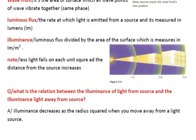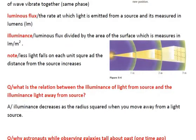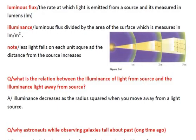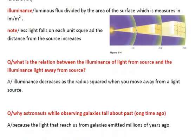We have a question here: what is the relation between the illuminance of light from the source and the illuminance of light away from the source? If you look at the figure, we have illuminance in a small square and illuminance in the large square. The answer says illuminance decreases as the radius squared when you move away from the light source. So in here, illuminance is high, but as we pass a large distance from the source, like three meters for example, the illuminance of light decreases.